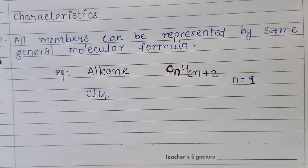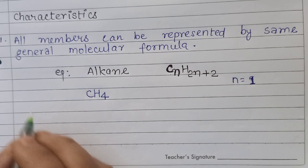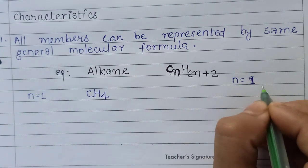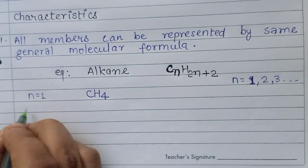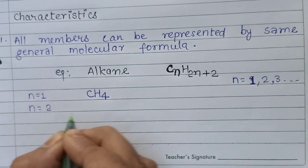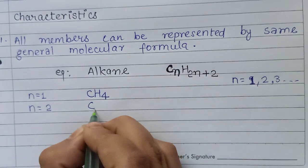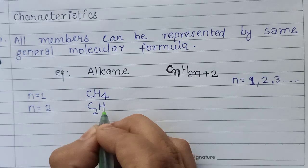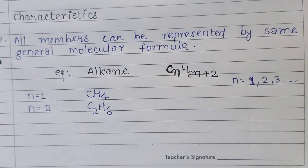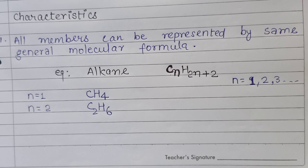If the value of n is 2, then C₂H(2×2+2) = C₂H₆. So the second member of the alkane series is C₂H₆.